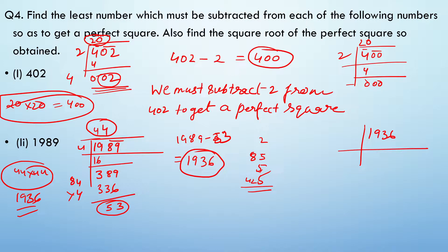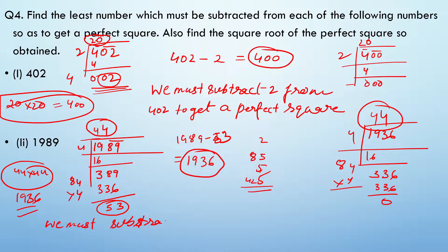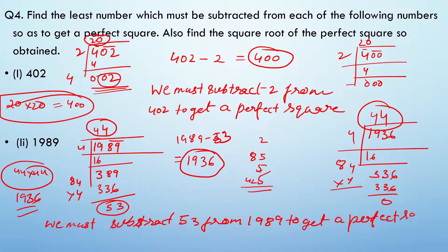So 1936 is the perfect square — four fours are 16, double the 4, multiply again, bringing 36 down, giving 44 with remainder 0. Therefore, we must subtract 53 from 1989 to get a perfect square.